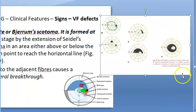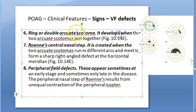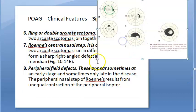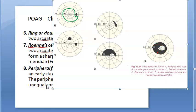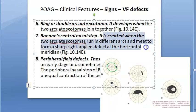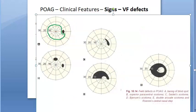Sixth: ring or double arcuate scotoma. It develops when two arcuate scotomas — one superior, one inferior — join together to form a ring. Along with this, Ronne's central nasal step is formed. Ronne's central nasal step is created when the two arcuate scotomas run in different arcs and meet to form a sharp right-angle defect at the horizontal meridian — like a step at the horizontal meridian.